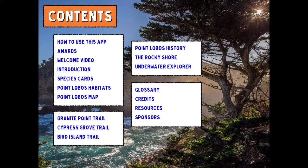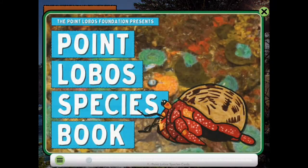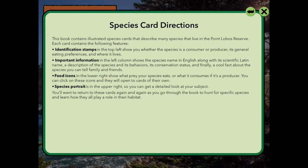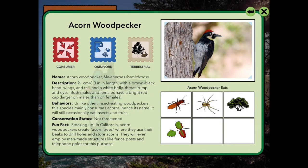Tap anywhere on the screen to bring up the table of contents, and in the far left-hand bottom you'll see the small bird icon — tap on that. This brings up the Point Lobos Species Book. If we slide through it to the right, you'll find directions on how to use it and various items. For instance, the Acorn Woodpecker has information including a description, fun facts, behaviors, and the scientific name. It's a consumer, an omnivore, and it's terrestrial.